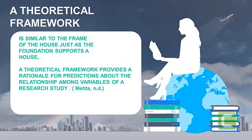The theoretical framework is similar to the frame of a house, just as the foundation supports a house. A theoretical framework provides a rationale for predictions about the relationship among variables of a research study. It identifies the variables investigated in the study and illustrates how the variables interact with each other as hypothesized in the research, aided by diagrams. Theory provides patterns for the interpretation of data, links one study to another, supplies a framework within which concepts and variables acquire special significance, and allows us to interpret the larger meaning of our findings. The theoretical framework states the central concepts integral to the study, connecting the study to theory.